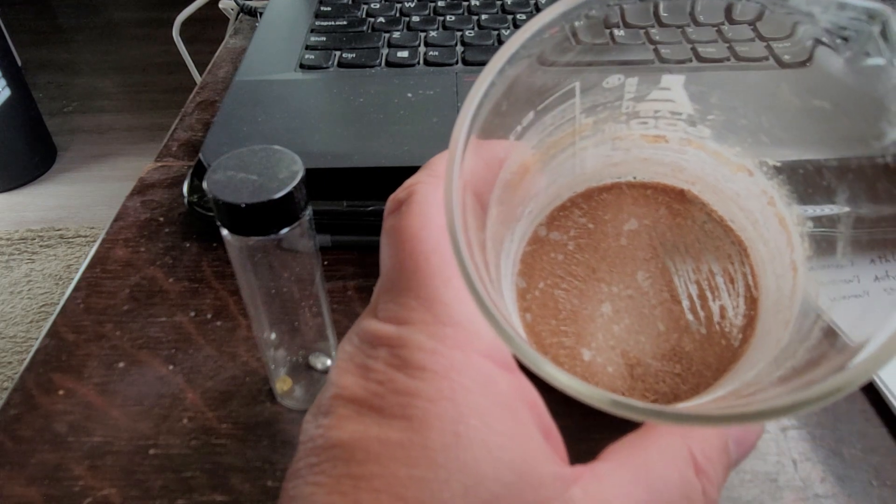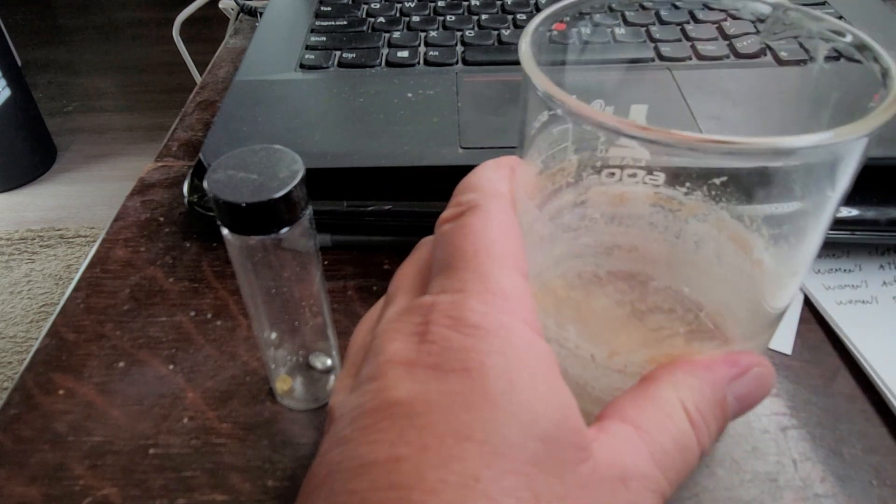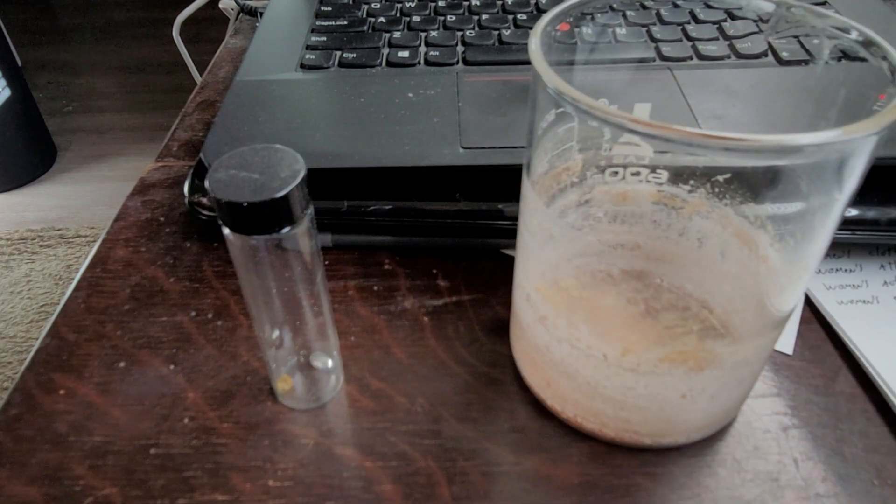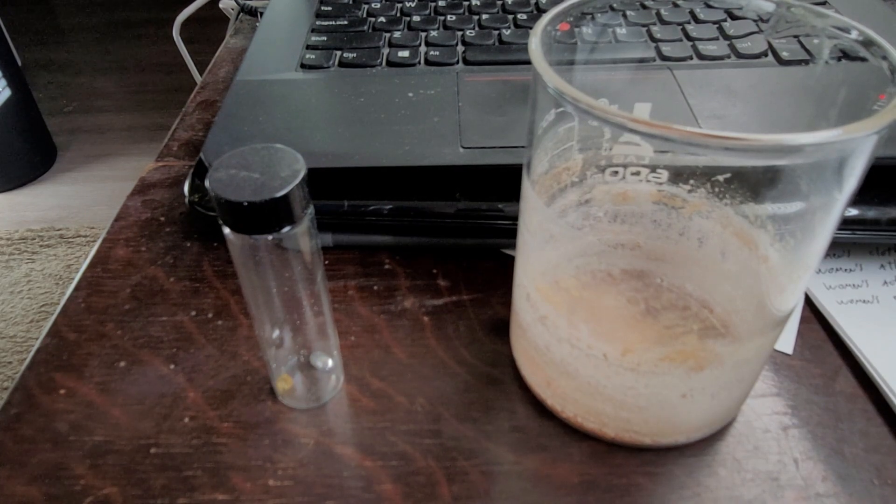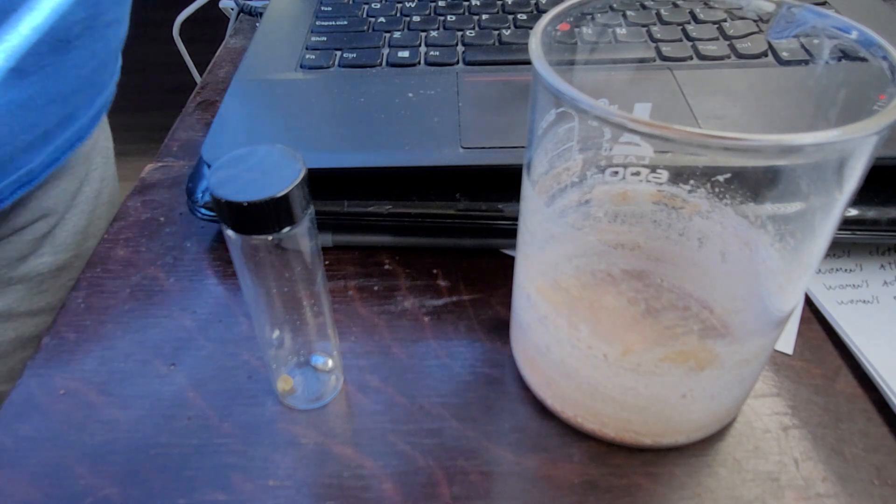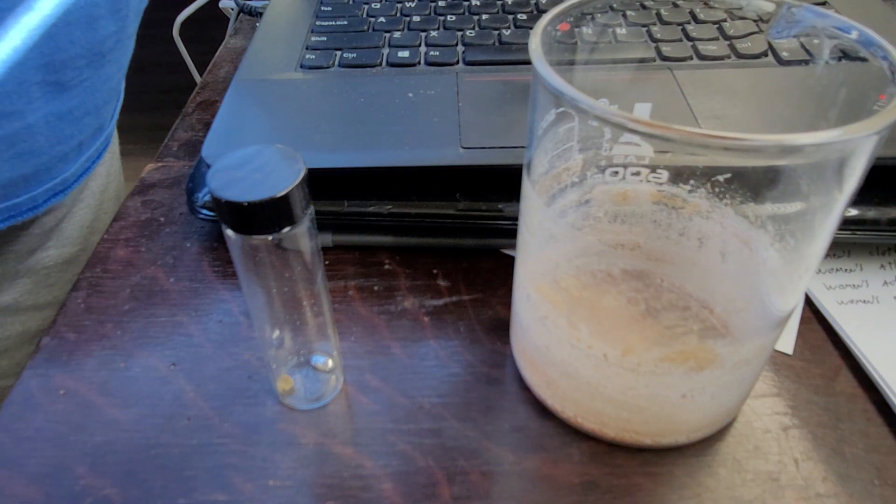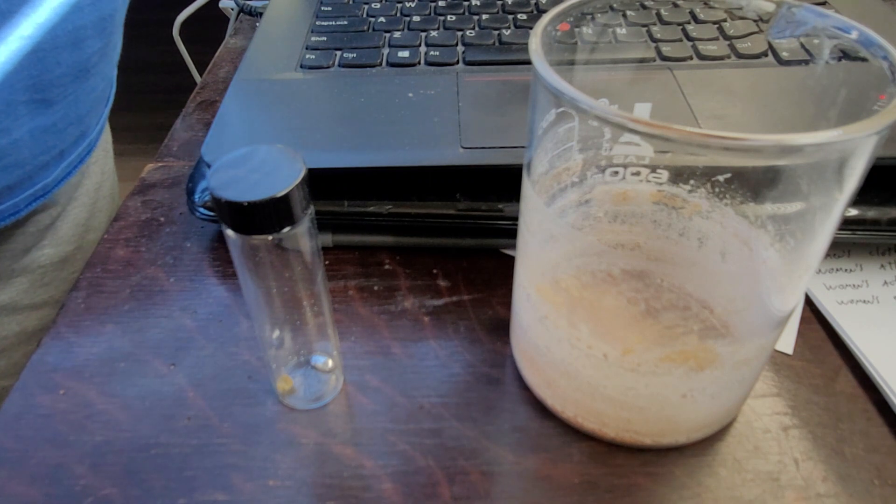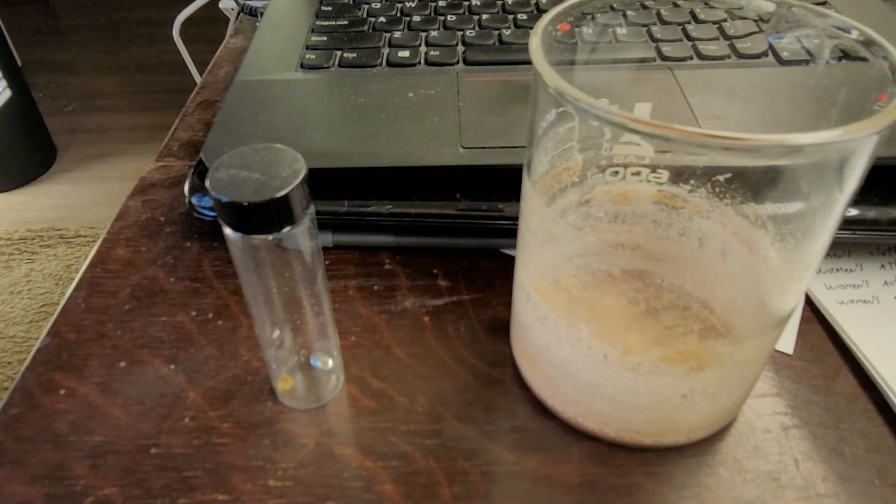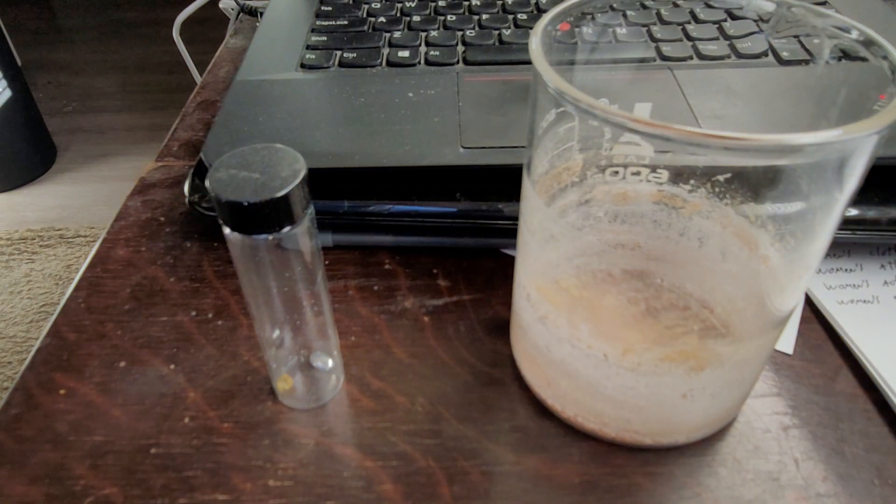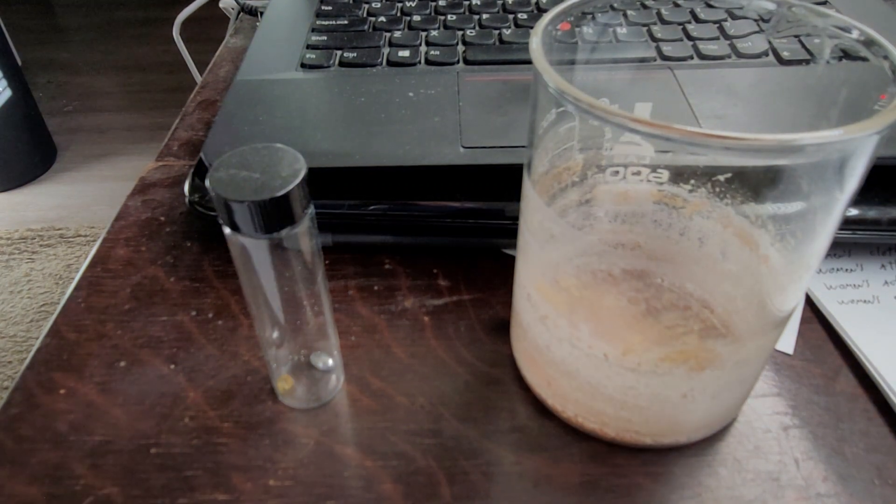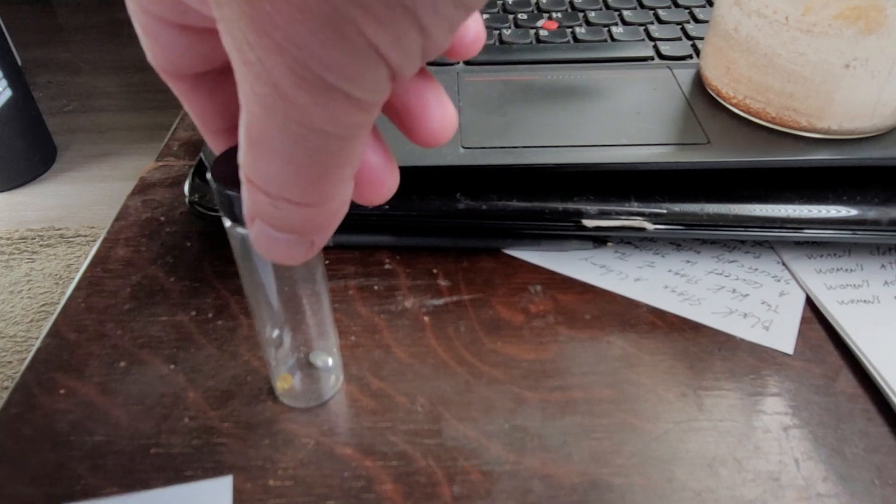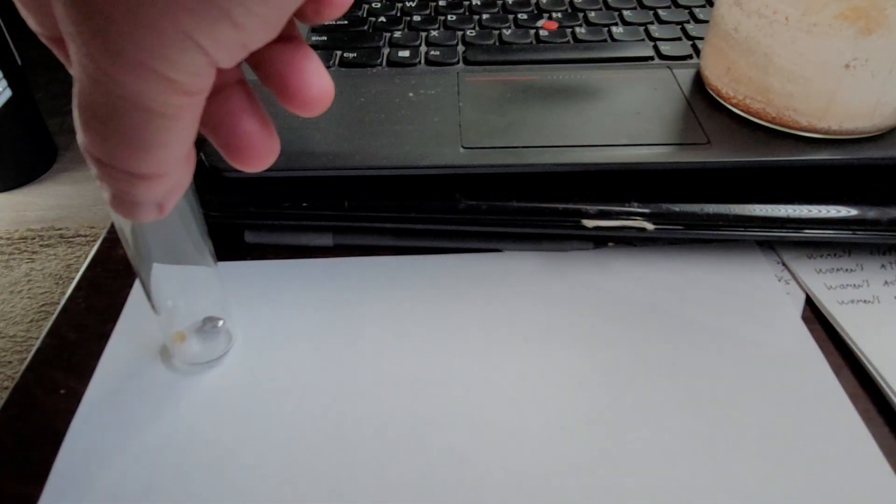So is this the transmutation powder of alchemy? Is this the projection powder? Is this the one that works? Well, we're going to be looking into that. I do find it interesting that it has the appearance of a gold colored salt.